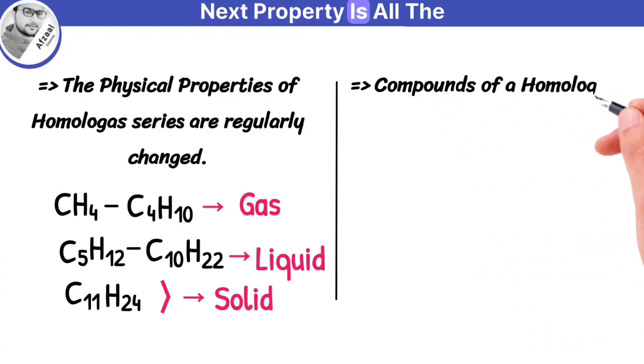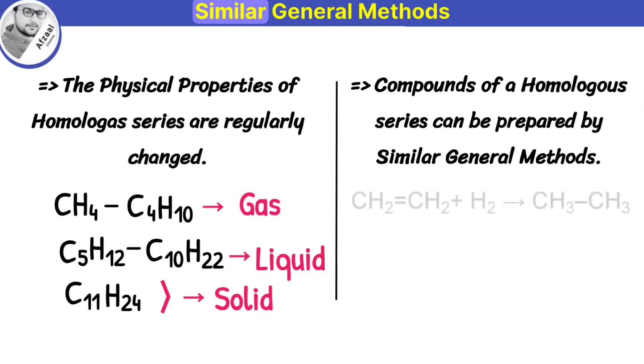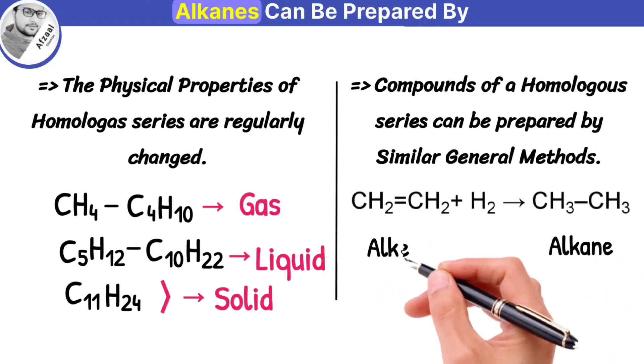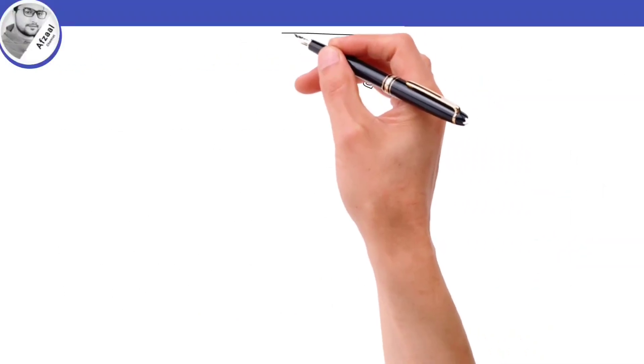Next property is, all the compounds of a homologous series can be prepared by similar general methods. For example, all members of alkanes can be prepared by adding hydrogen molecule to alkenes.